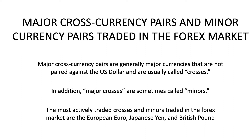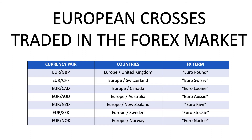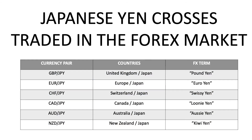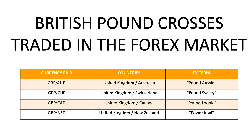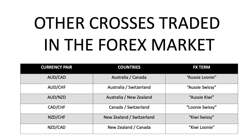The most actively traded crosses and minors in the Forex market are the European euro, Japanese yen, and British pound. Here's a list of the European crosses that are traded, followed by the Japanese yen crosses, and after that the British pound crosses and other crosses traded in the Forex market.